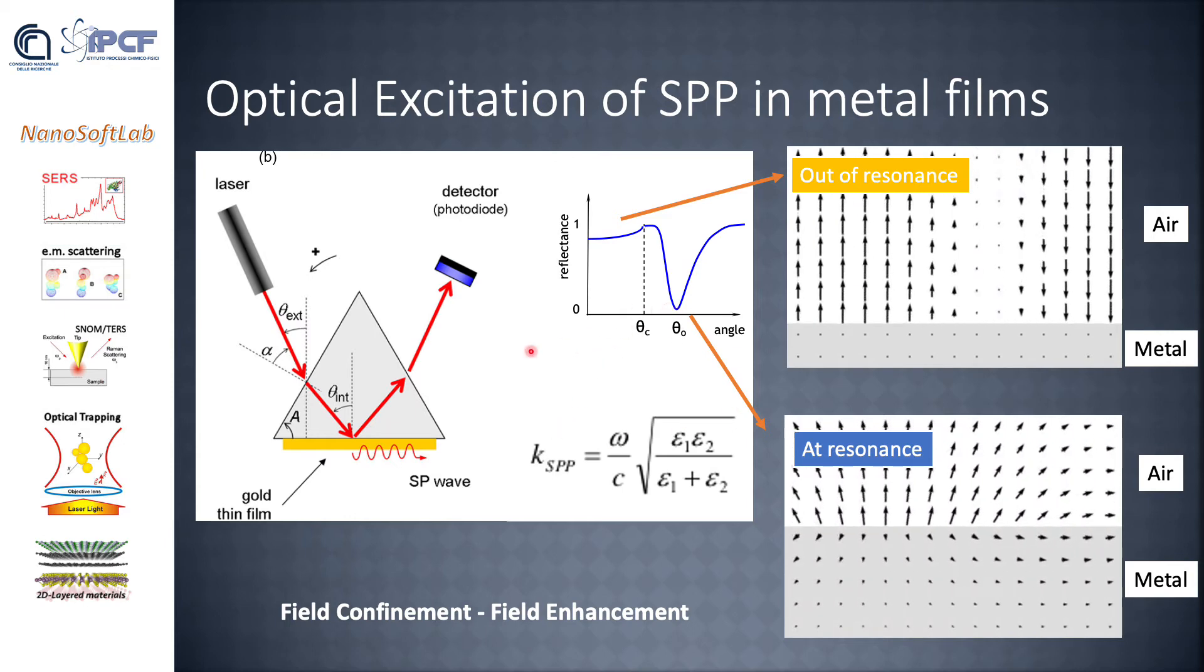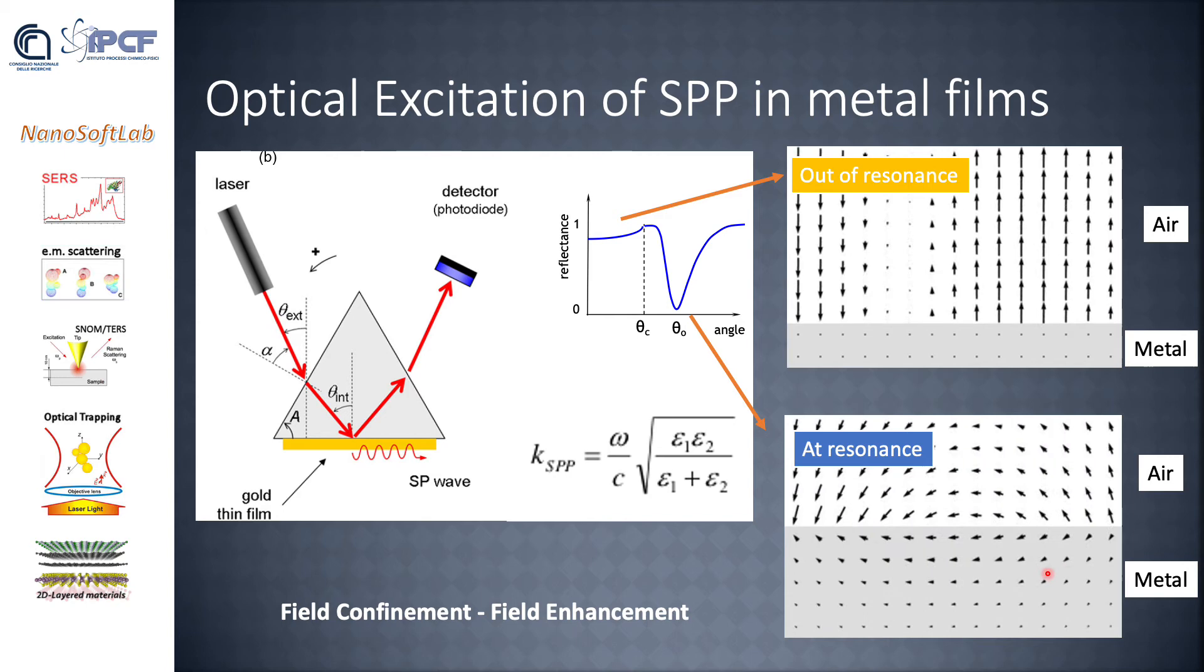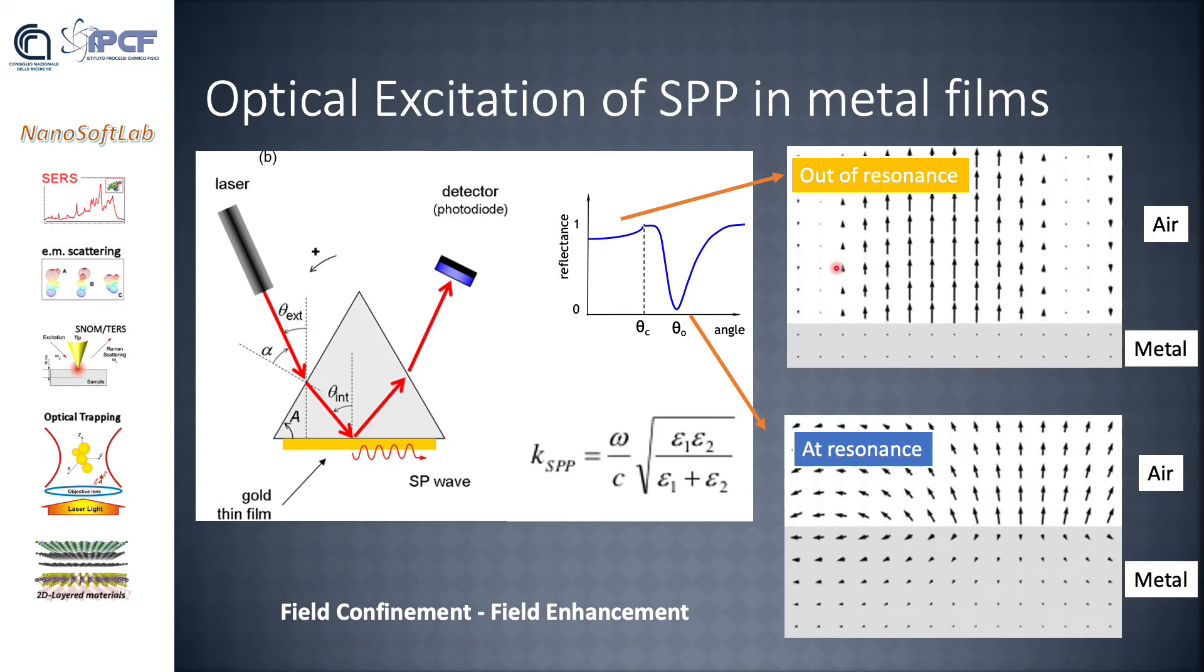When the condition is fulfilled, we see that the field in the air and in the metal is like this. So there is some field inside the metal, while outside of this resonance condition, the field is all in the air and is not in the metal.